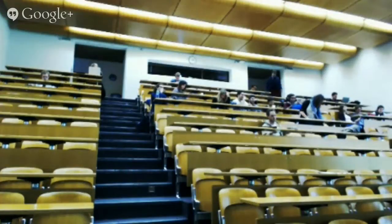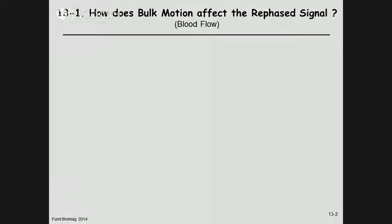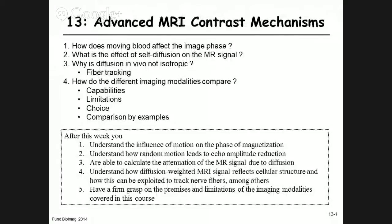Welcome everyone to today's course, which is the last one of the semester. We're going to end magnetic resonance imaging with advanced contrast mechanisms. The theme is how to image motion with MRI. We'll cover how to track flow in blood, the effect of self-diffusion on the MR signal, and why diffusion in tissues is not isotropic as in fluids.